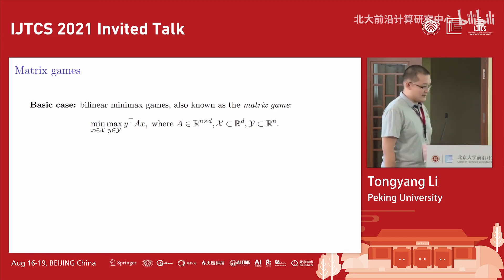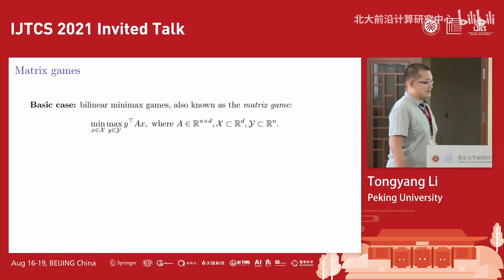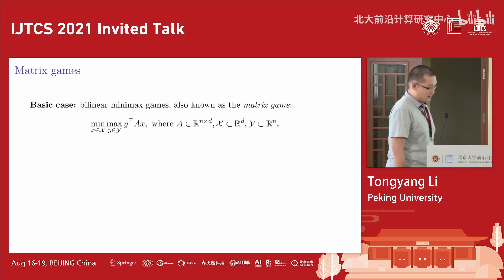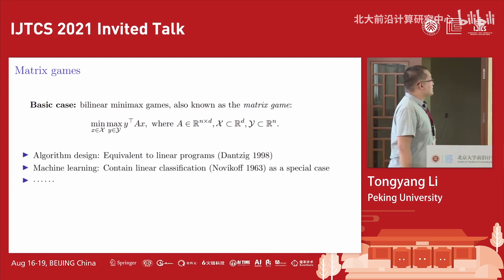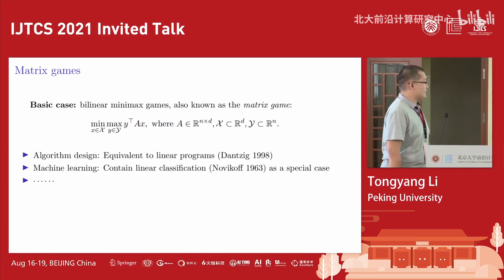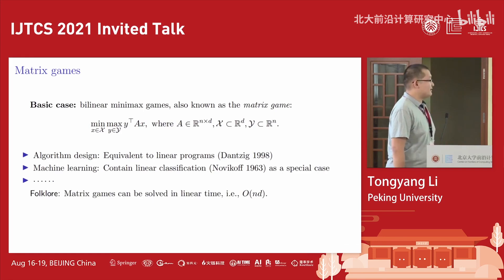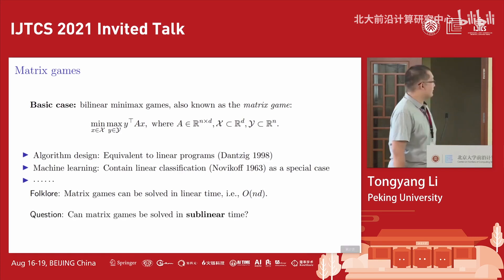A very important basic case is the bilinear minimax game, also known as the matrix game. We have a matrix A that is n by d, with x from some input set and y from another. This is also important because it is equivalent to linear programs, and it contains linear classification as a special case. It is a folklore result that the matrix game can be solved in linear time — roughly O(nd).